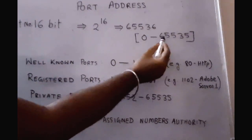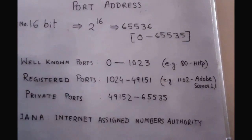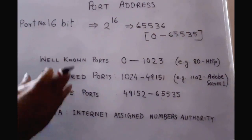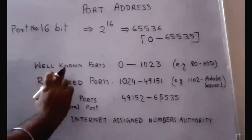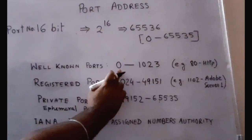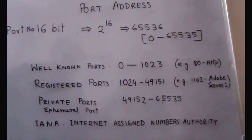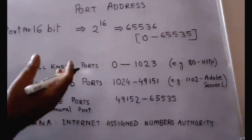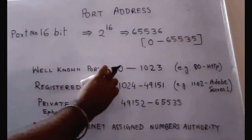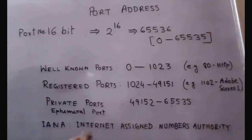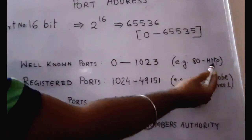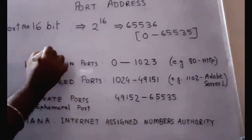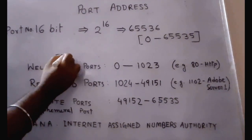Now this total range can be divided into three categories. Well-known ports range from 0 to 1,023. These are called well-known ports because users know what services are available on those particular ports. For example, if we consider HTTP, it works on port number 80. Similarly, if we consider FTP, FTP data works on port number 20.